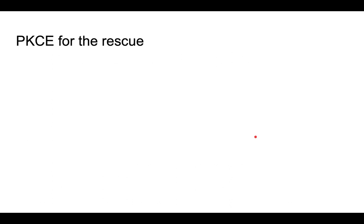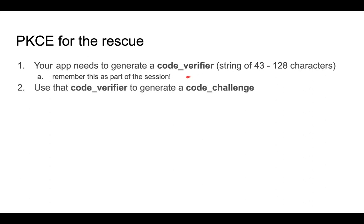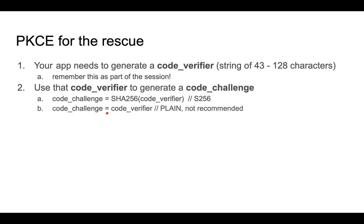In order to fix this, PKCE was introduced. Your app needs to generate a so-called code verifier, which is a string 43 to 128 characters, and this code you have to remember is part of your session. Next, take this code verifier and generate a so-called code challenge. The code challenge may be generated using SHA-256, or the code challenge may be set to the code verifier, which would be called the plain method and is not recommended.